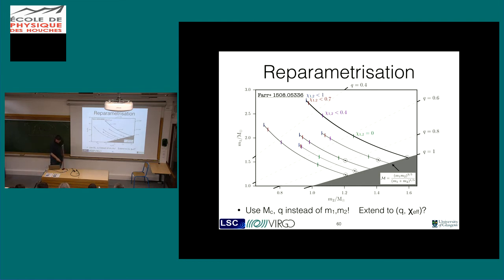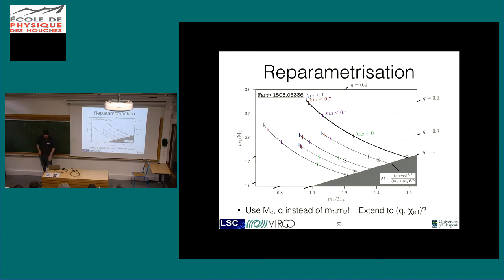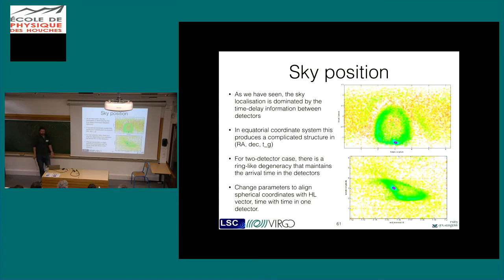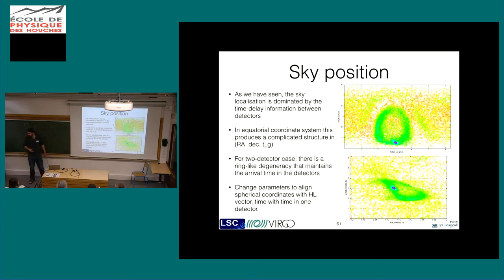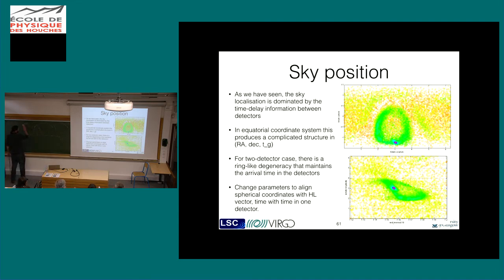Another one we looked at yesterday is the sky location. The time delay information is the dominant information in localizing a source. If you take a pair of detectors separated on the Earth and know the delay time between them, then there's a ring of allowed positions consistent with that particular time delay. For example, with Livingston and Hanford, a wave coming in a particular direction will have some phase at each detector, and the angle between the direction of propagation and the vector separating the two detectors must be a specific value - but there's a ring that's consistent with that angle.